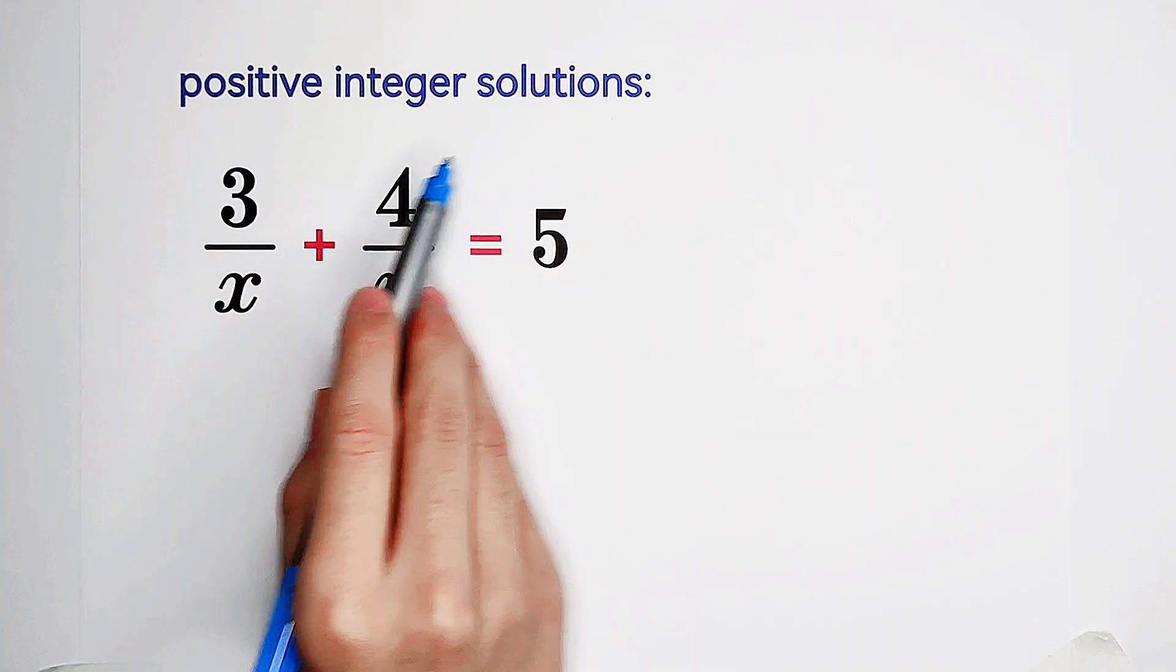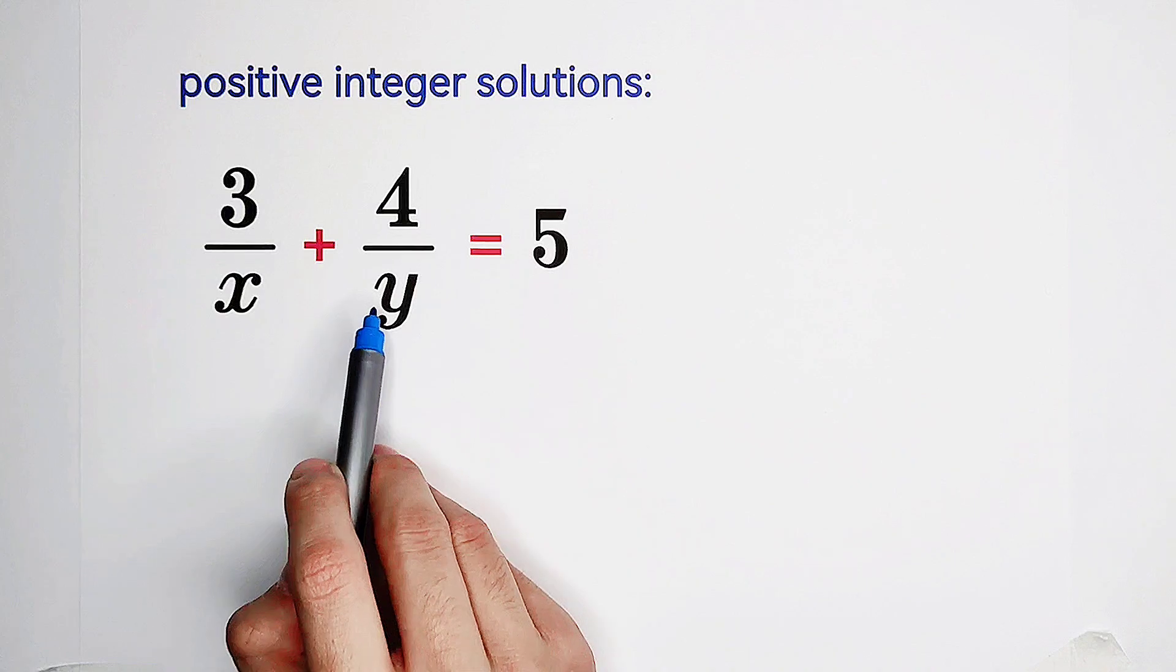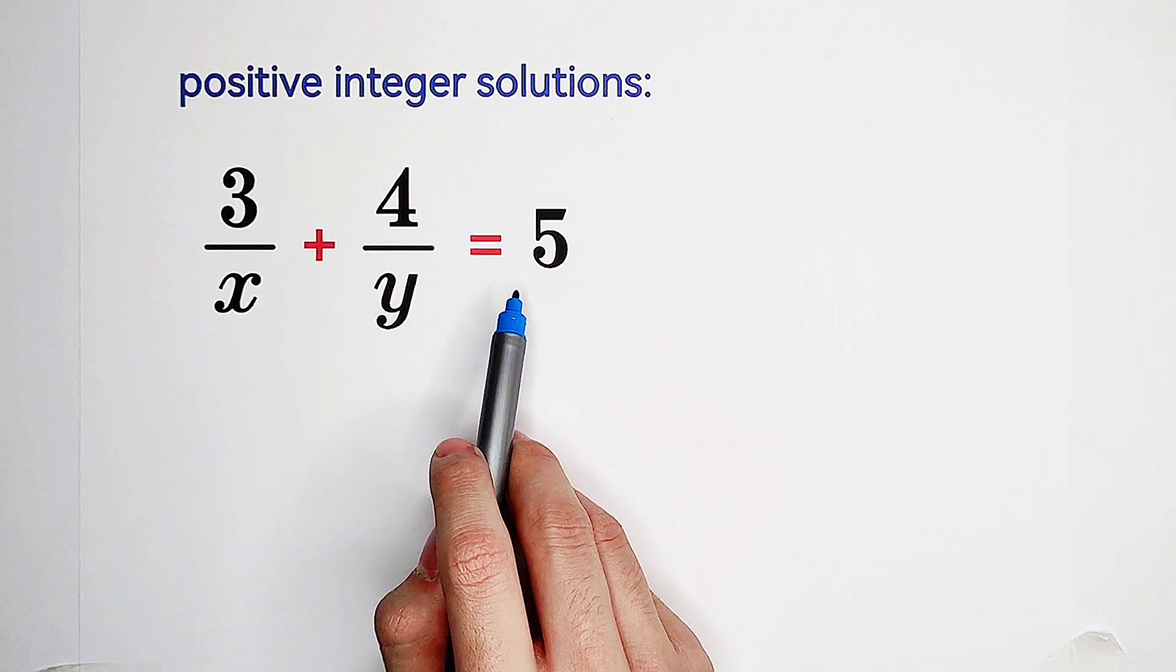Find the positive integer solutions to this equation: 3 over x plus 4 over y equals 5.